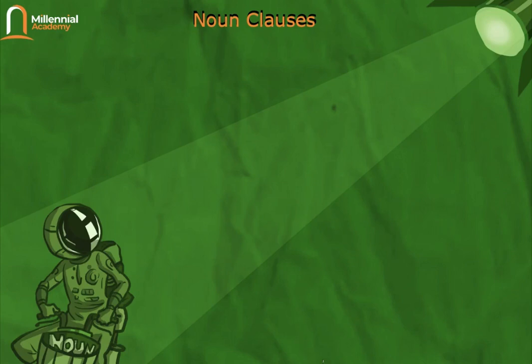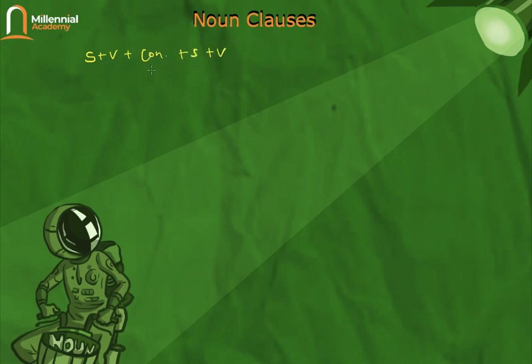Hi millennials, welcome back to our second video. This video is going to talk about another thing about noun clauses. As I've explained before, the structure is connector then subject-verb when the noun clause functions as an object. But another thing is they also can serve as a subject.